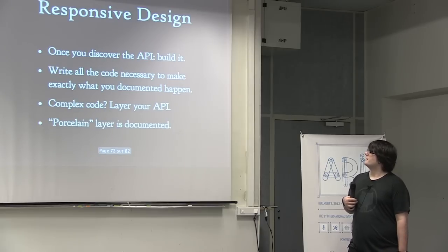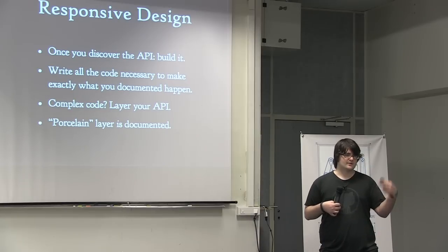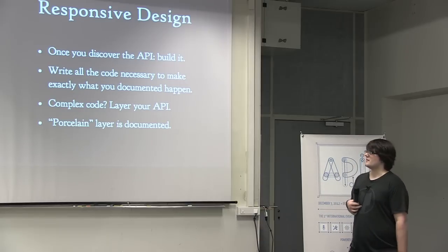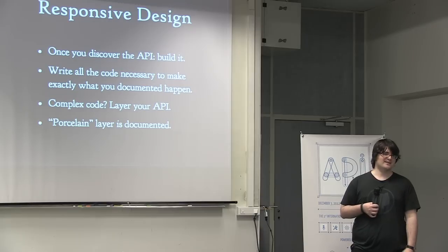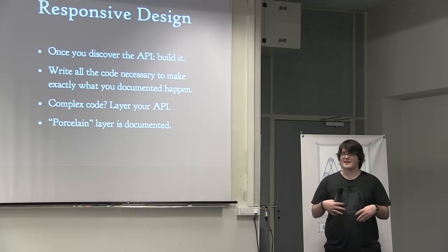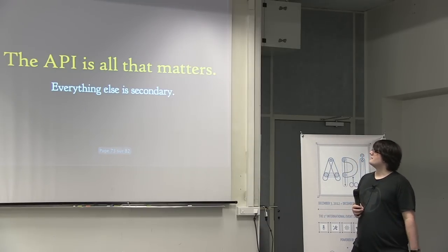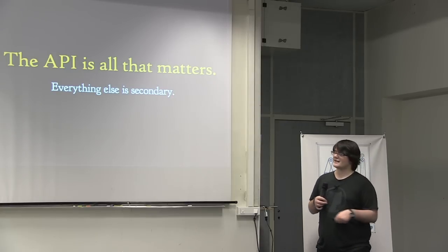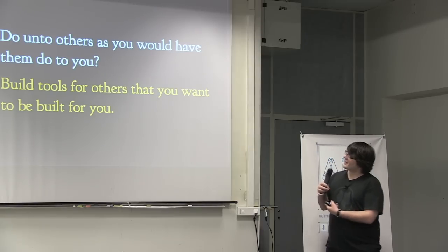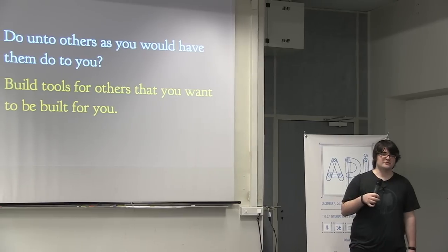Once you discover the API, you can write all the code necessary to make all the different calls actually happen. If you have one function or call that requires a thousand lines of code behind it, you can layer it — a lower-level API with more porcelain layers that the users actually interact with. The API is all that matters; everything else is secondary. Build tools for others that you want to be built for you.